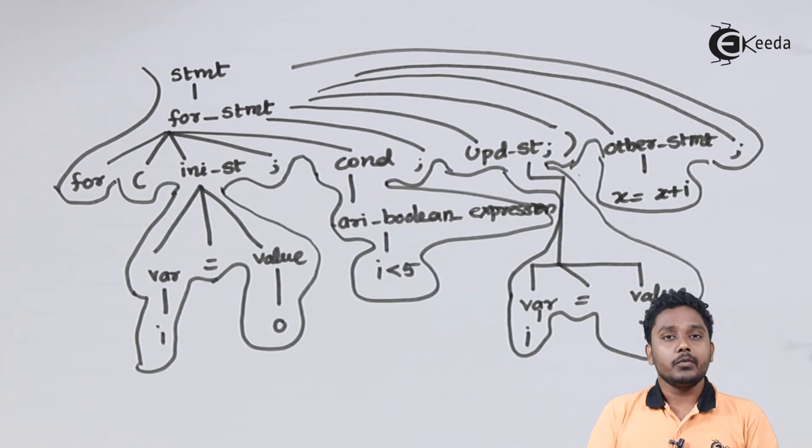Using these kind of constructs actual programming languages are constructed but they involve a lot of complex grammars. Using such small constructs even real world programming languages are constructed such as C, Java or C++ etc. But they will have much more as compared to simple grammar that we wrote here.